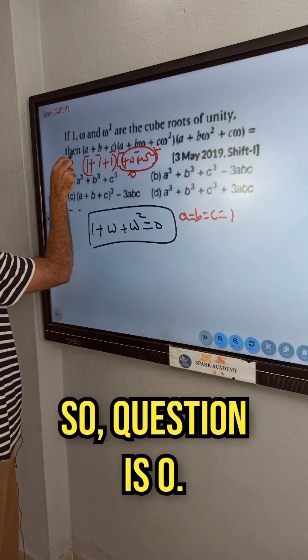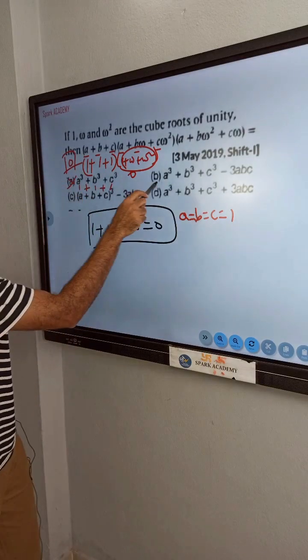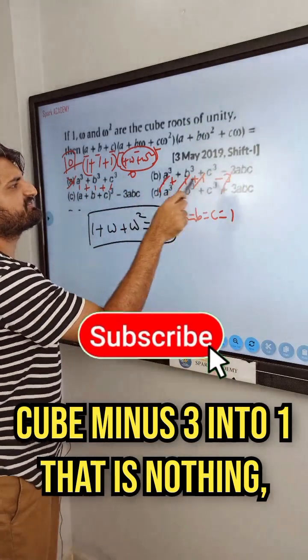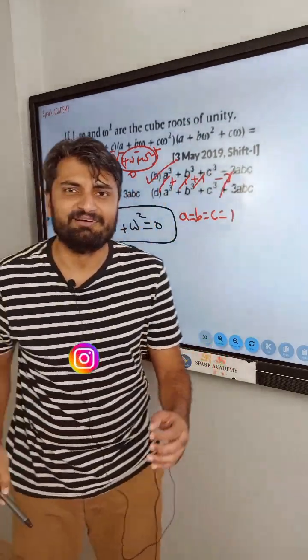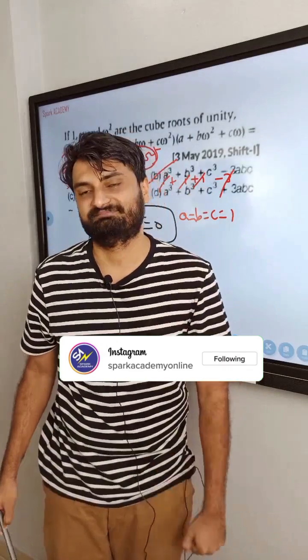Now let's look at options. First option 1 plus 1 plus 1, no. Second option 1 cube plus 1 cube plus 1 cube minus 3 into 1, 1 that is nothing but 3 minus 3 equals 0. So in this way very simple by substitution you can get the answer.